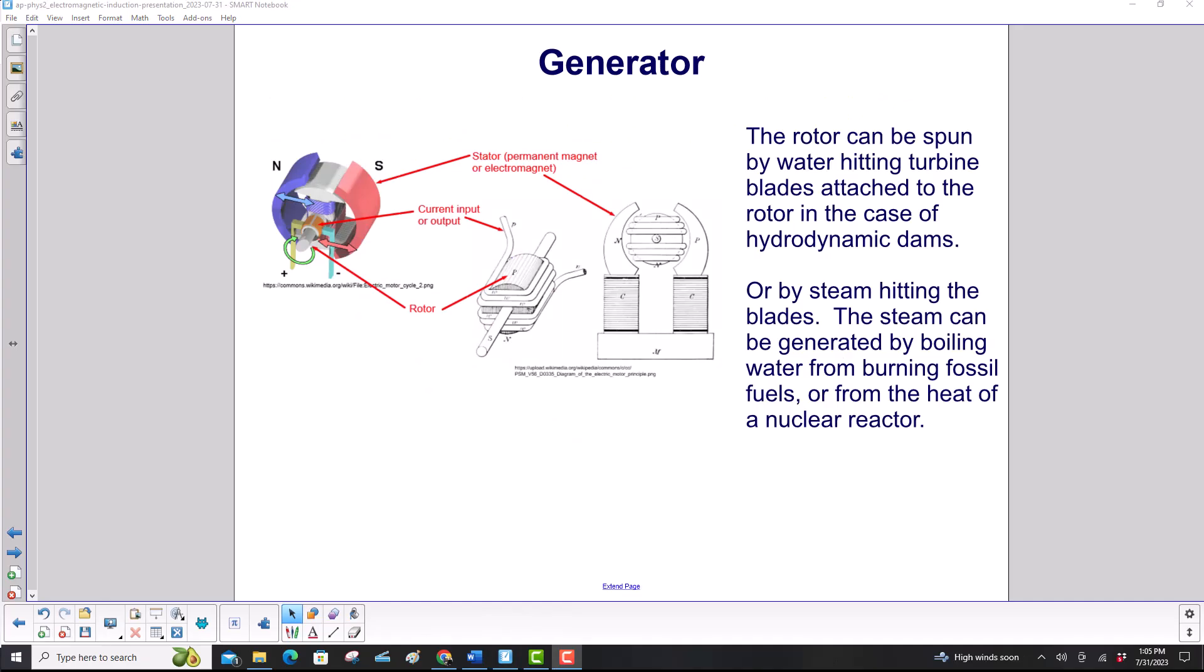The rotor can be spun by water hitting turbine blades attached to the rotor, in the case of hydroelectric dams, or by steam hitting the blades. The steam can be generated by boiling water from burning fossil fuels, or from the heat of a nuclear reactor.